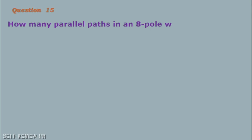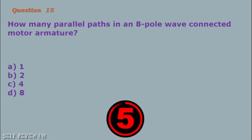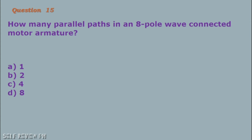Question number 15: How many parallel paths in an 8-pole wave connected motor armature? A. 1 B. 2 C. 4 D. 8. The correct answer is letter B, 2.